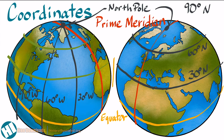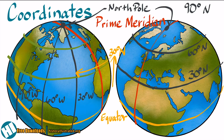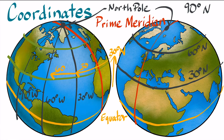From there we can move 30 degrees north — that means going up. And then we can move 90 degrees west — that means going to the left. Where they meet right here is 30 degrees north and 90 degrees west. That means I can put a dot right here and that must be where New Orleans is on the map.